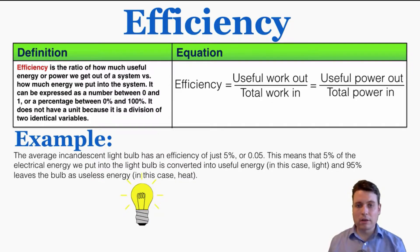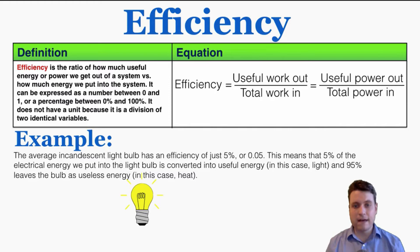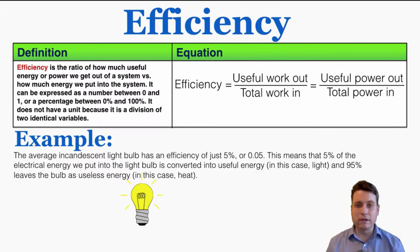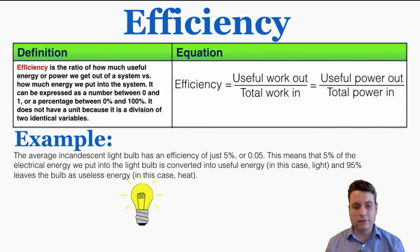You might ask how we know which power coming out of the system counts as useful — and that is somewhat subjective, based on what we want to get out of the situation. For example, the average incandescent light bulb has an efficiency of just 5%, or 0.05. This means 5% of the electrical energy put in is converted into useful energy — in this case, radiant or light energy. The remaining 95% leaves the bulb as useless heat.